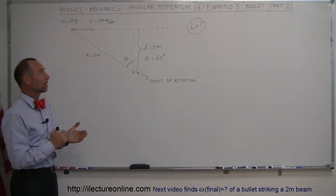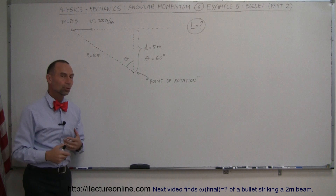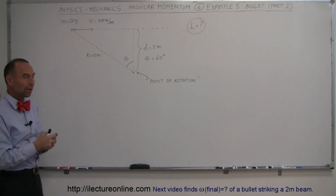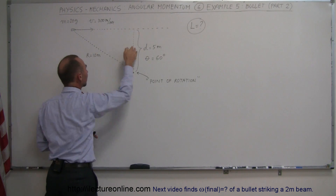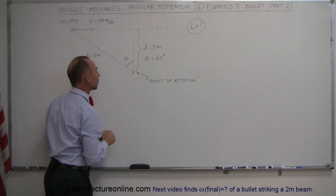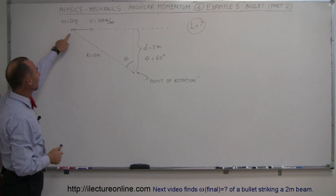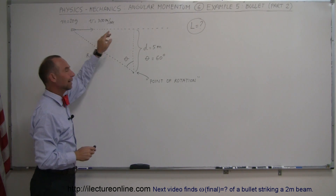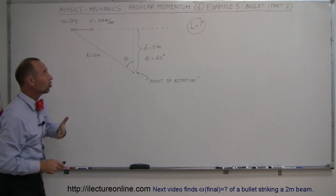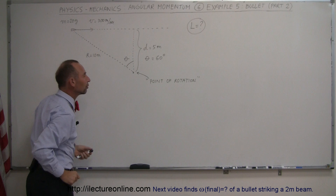To get an even better understanding of how we convert objects like bullets traveling in a straight line path into the equivalent angular momentum, we're going to do it where the bullet is not exactly perpendicular from the path of its motion to the point of rotation, but somewhere before it gets to that point. What is its equivalent angular momentum at this particular location? Notice that as it travels along its path, at any point in time, its angular momentum would change due to its relative position from the assumed point of rotation.